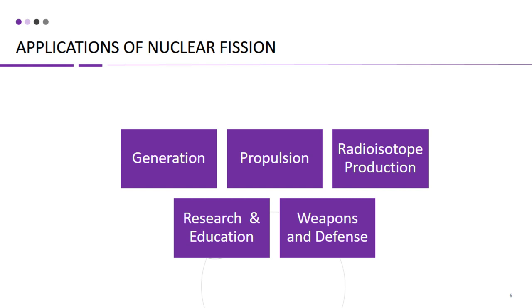While not a peaceful application, nuclear fission has been used as a basis for nuclear weapons. The energy released by uncontrolled fission reactions in a nuclear bomb leads to a powerful explosion. However, it's important to note that the production and use of nuclear weapons are heavily regulated under international treaties and agreements, such as the Treaty on the Non-Proliferation of Nuclear Weapons (NPT), which aims to prevent the spread of nuclear weapons and promote disarmament.